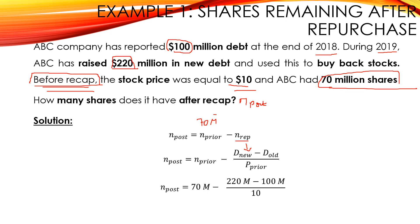So N post equals 70 million minus (220 million minus 100 million) over 10 dollars. As a result, N post will be equal to 58 million shares. So ABC has, after the repurchase, 58 million shares.